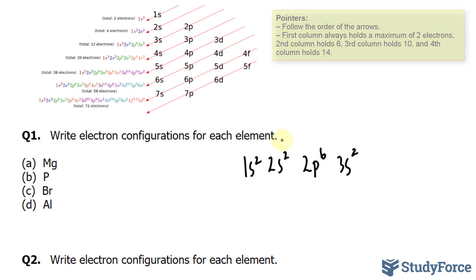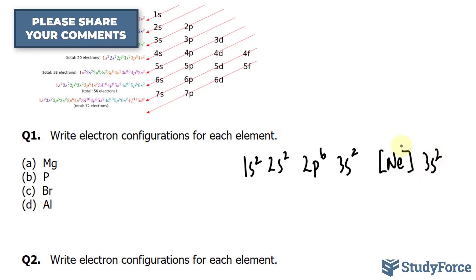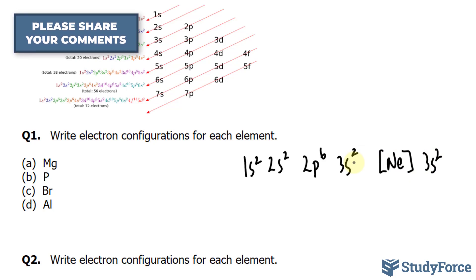Now, of course, you can write this down in a shortened way. You can write down neon 3s², because neon contains 10 electrons, and you're left with 3s². The next element that we have is phosphorus, and phosphorus has 15 electrons.